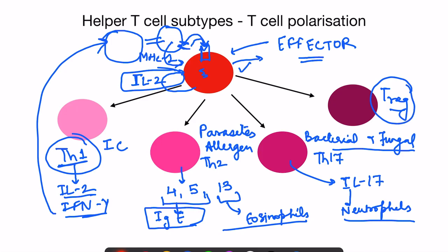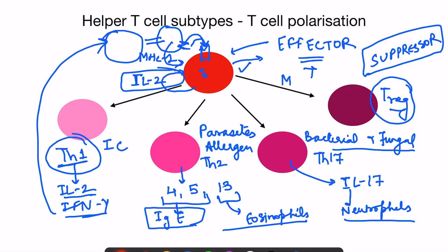Finally, we have T regulatory cells, also known as suppressor T cells. We saw two subtypes of T cells: helper T cells and cytotoxic T cells; suppressor T cells are a subtype of helper T cells. Apart from these effector T cells, there is also formation of memory T cells, which go and sit in various lymph nodes ready to respond rapidly to any antigen that attacks in the future.